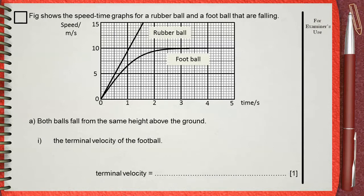Figure shows the speed-time graph for a rubber ball and a football that are falling together. Both balls fall from the same height above the ground. Part A: Find the terminal velocity of the football.